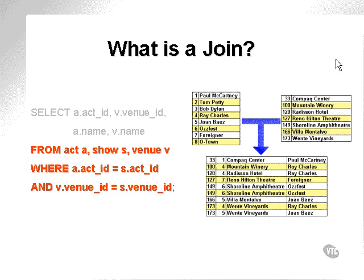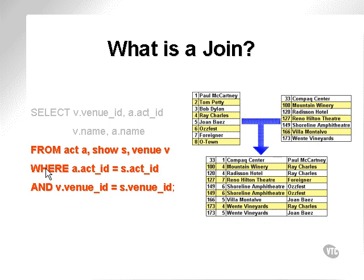The correct query would actually be, as shown here: act ID, venue ID, a name, and v name. The correct query for this diagram is actually venue ID, act ID, v name, and a name — all joined from between the ACT, SHOW, and VENUE tables using the WHERE clause, joining ACT between the ACT table and SHOW table, and joining VENUE between the VENUE table and SHOW table.